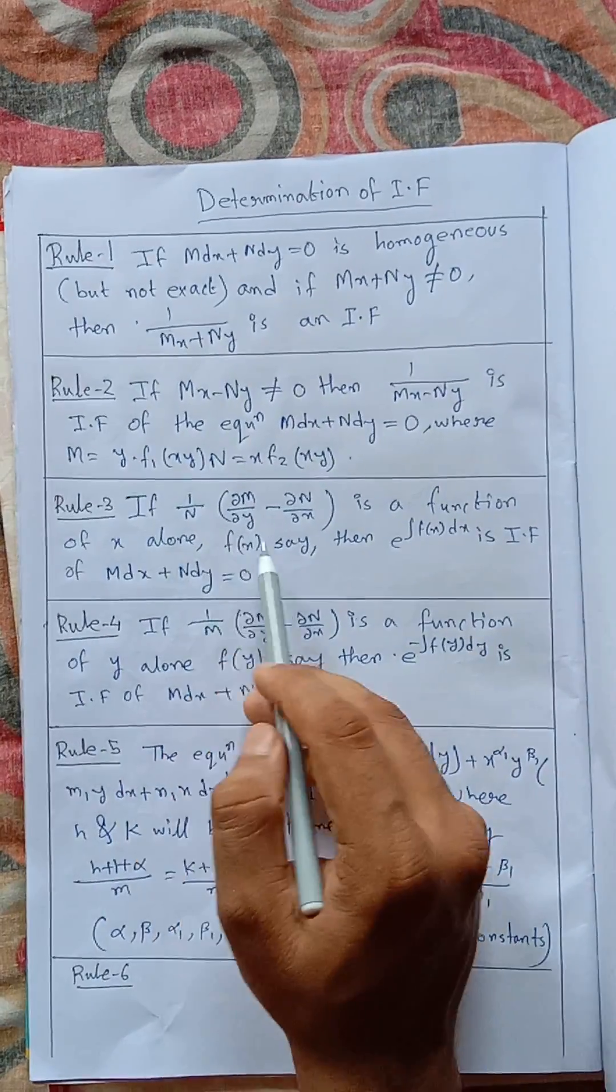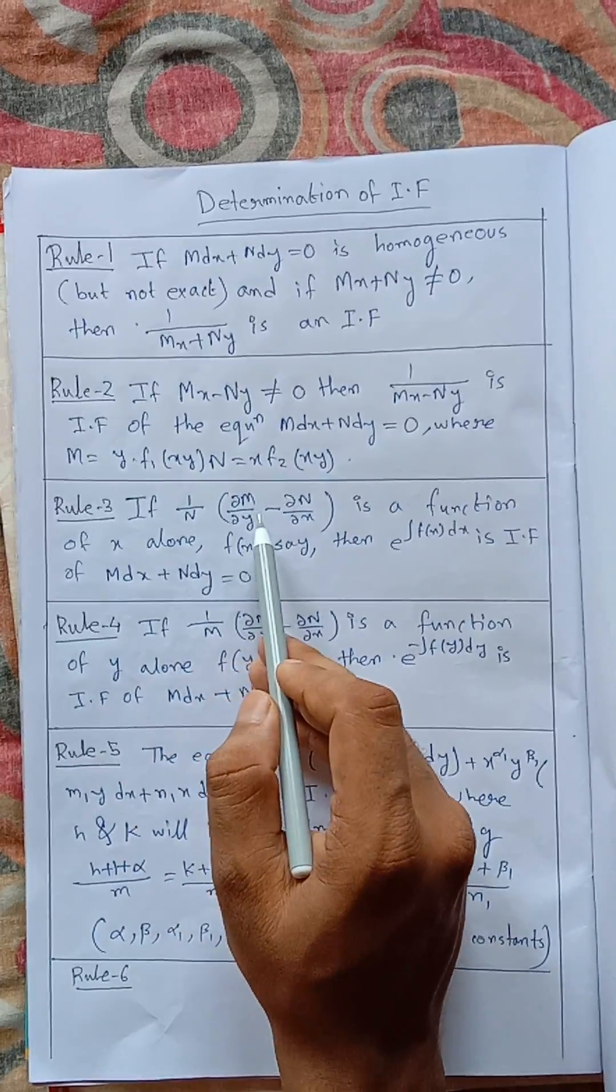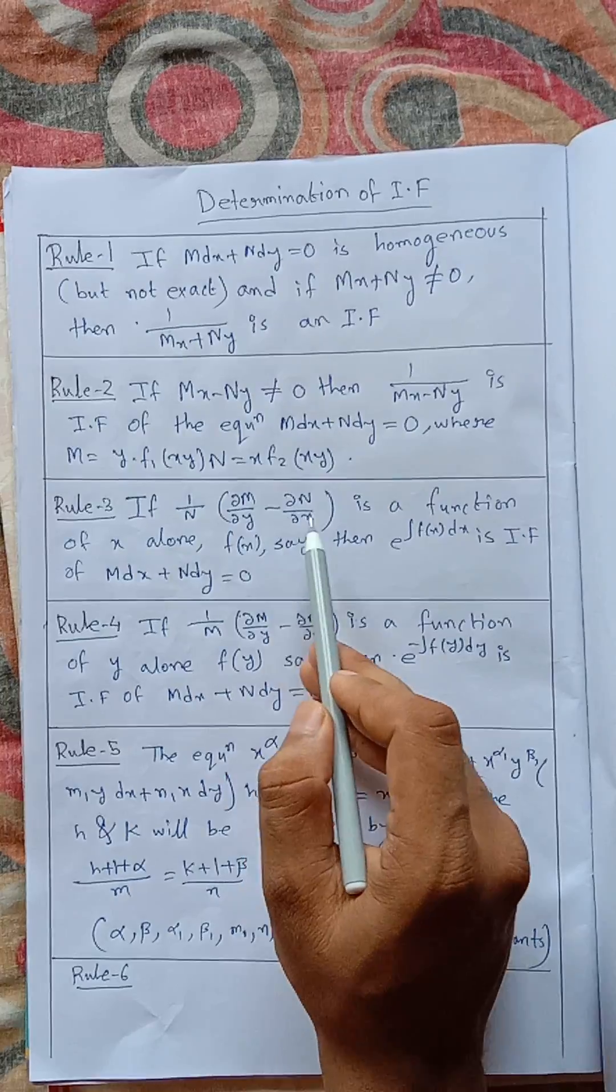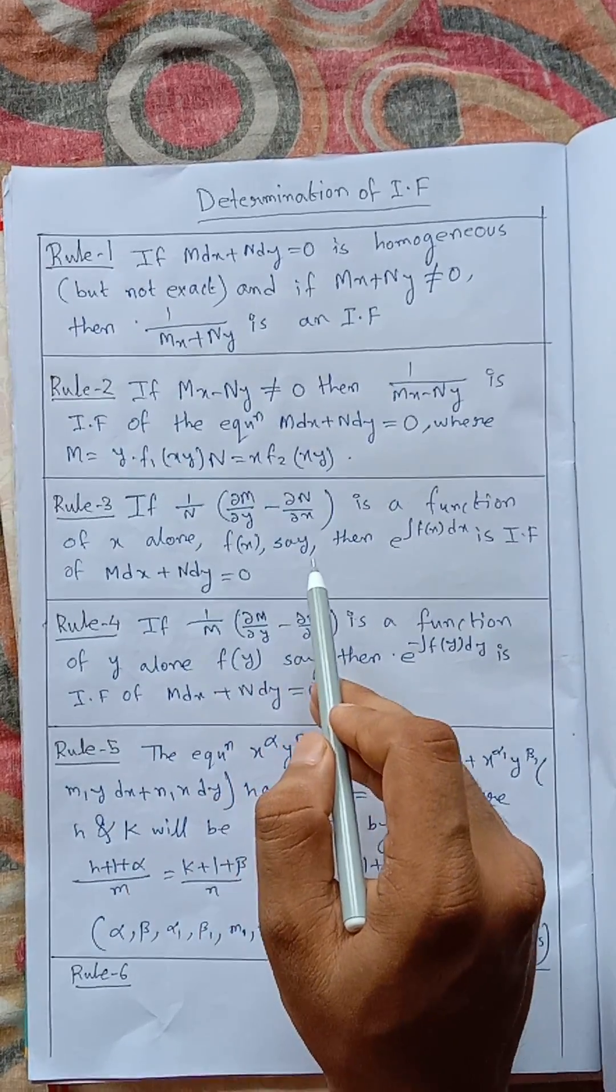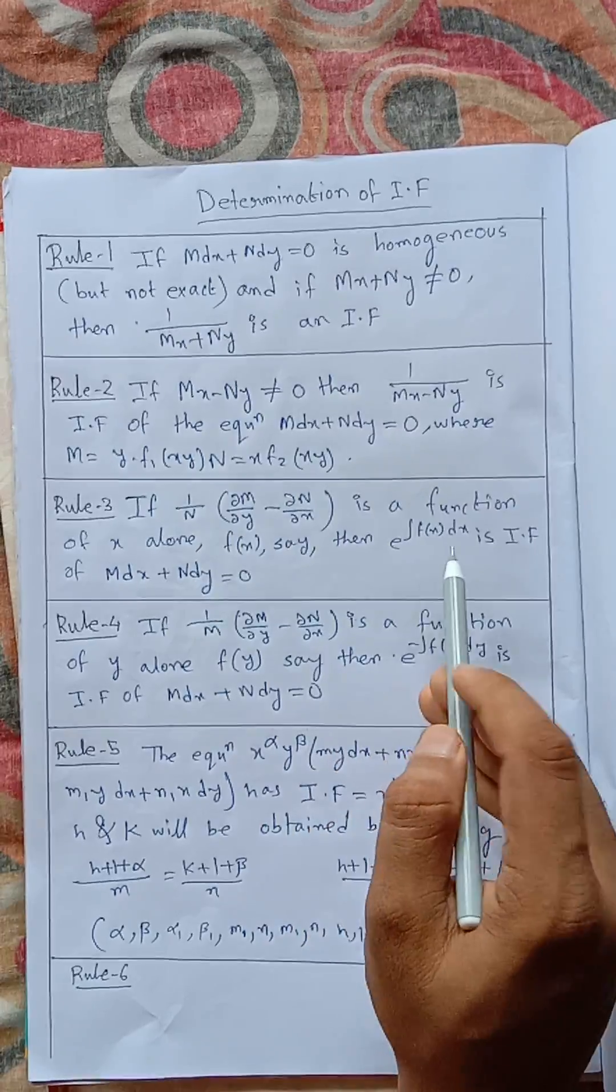So then if 1 by n into del m del y minus del n del x is a function of x alone, f of x say, then e to the power f of x dx is the integrating factor.